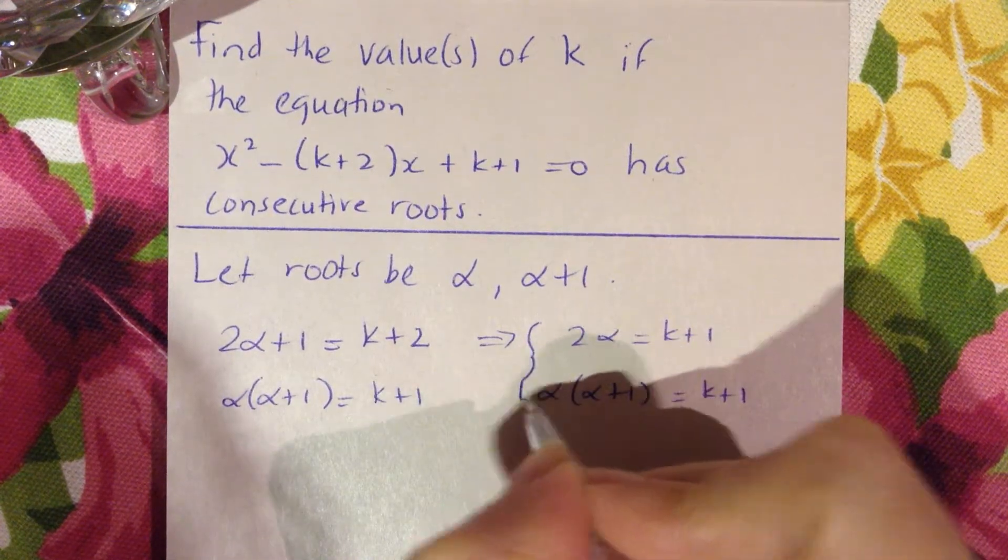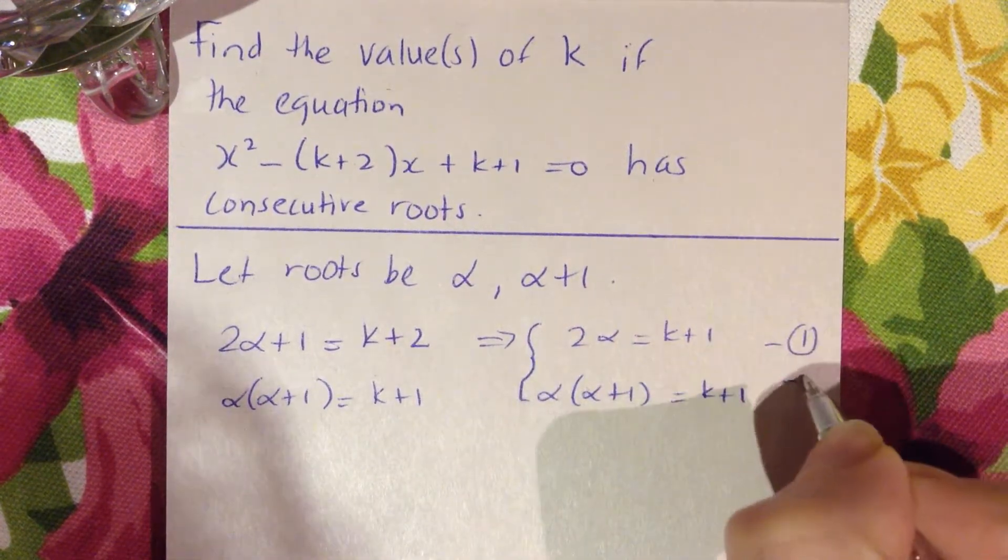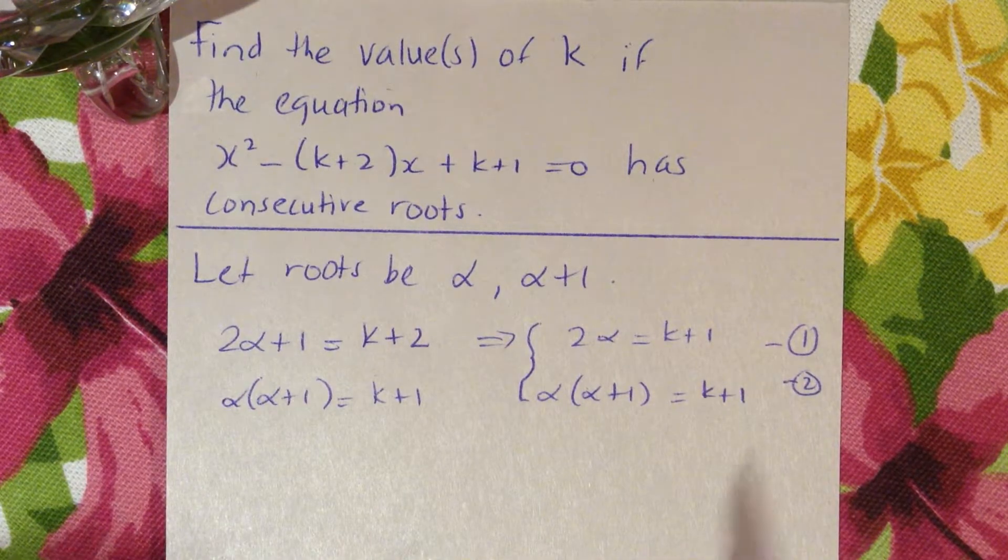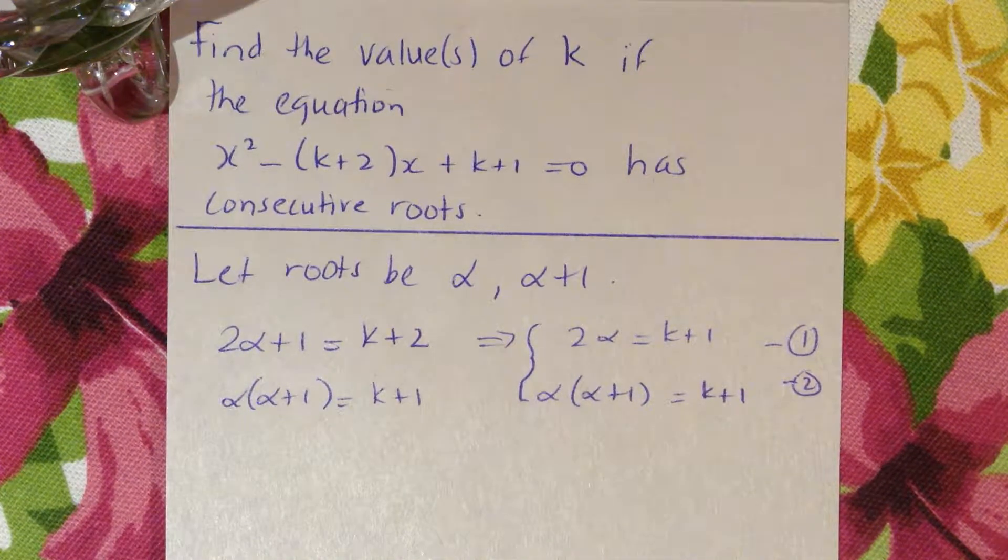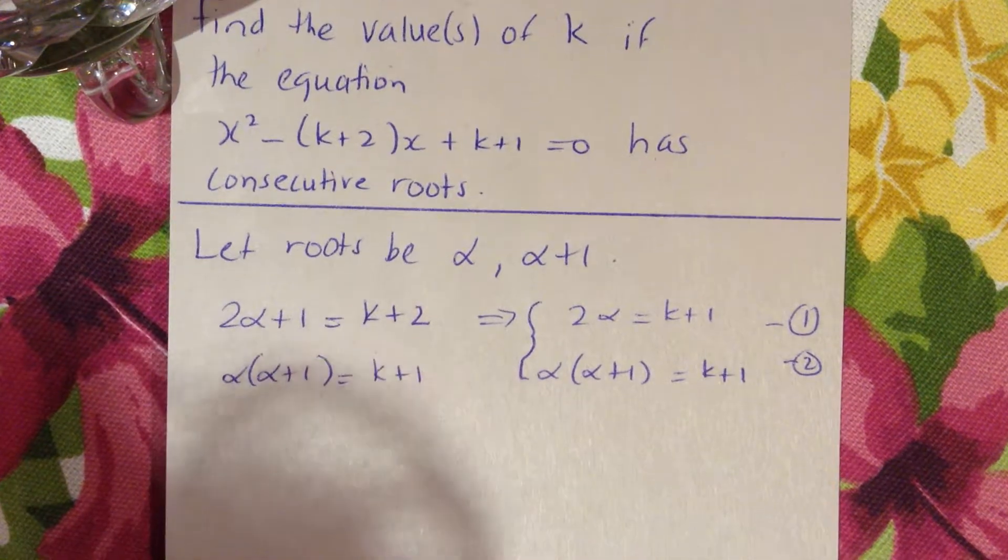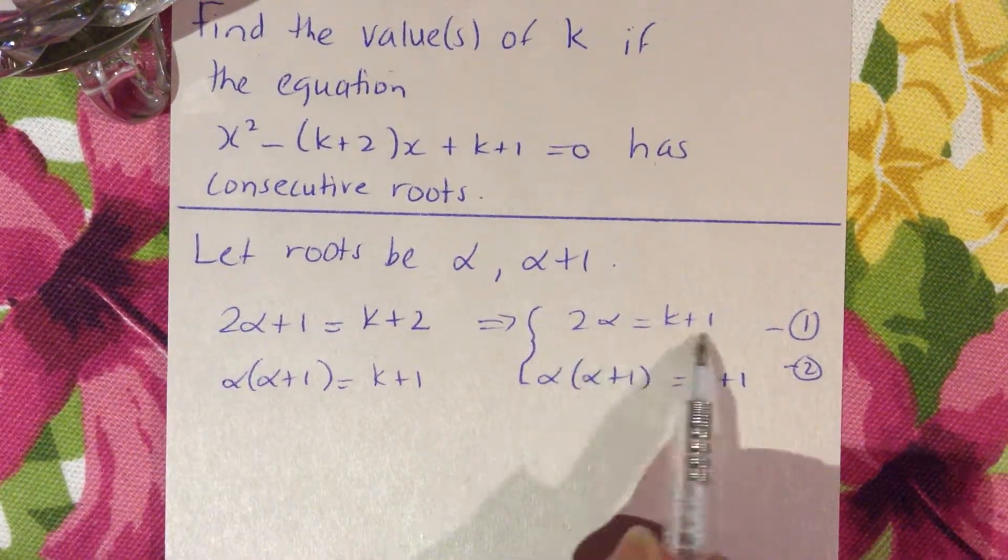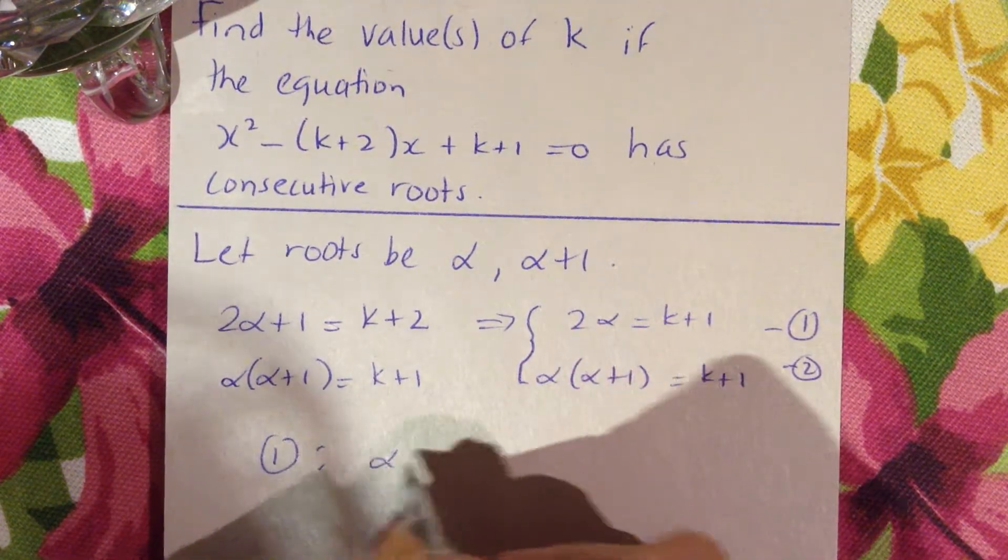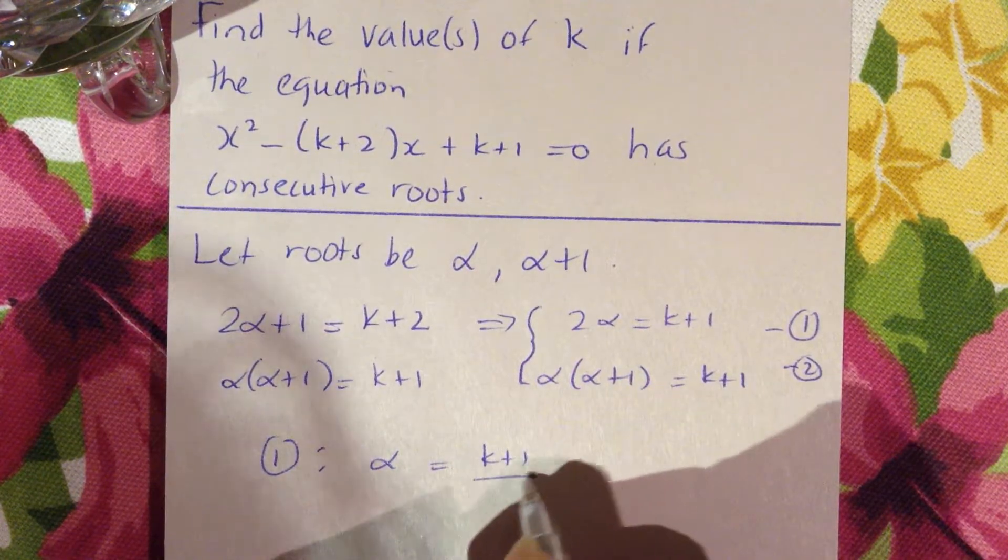You're going to solve these two simultaneously, but really we're only interested in going halfway to find k. We don't want to find α, we want to find k. So let's make α the subject in number 1: α = (k+1)/2.